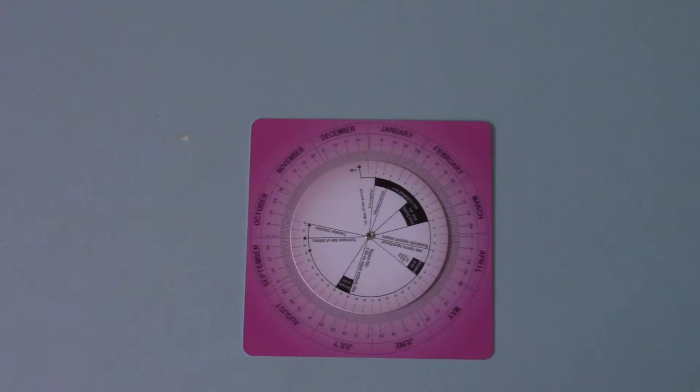The first possible quickenings, which are the first sensations of movement within the uterus that the lady might be expected to feel, through to second trimester start dates, and then through to the expected date of delivery calculations, which are obviously nine months later.